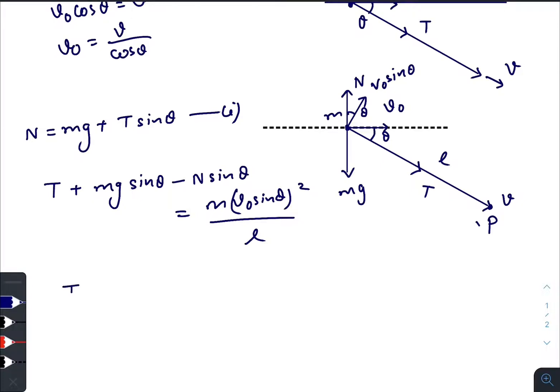So T plus Mg sine theta using the value of N from the first equation, we will get Mg sine theta plus T sine square theta equals M times V0 square sine square theta divided by L.